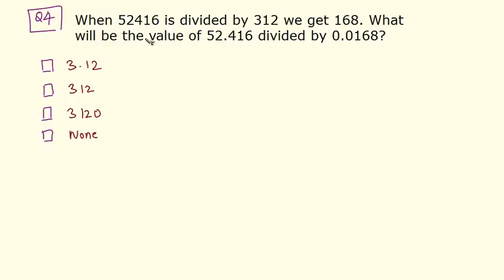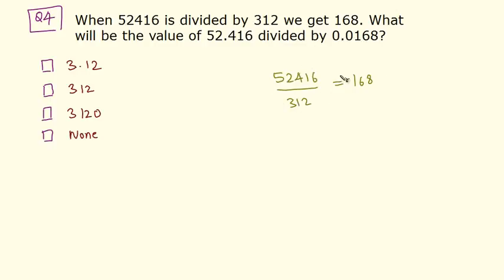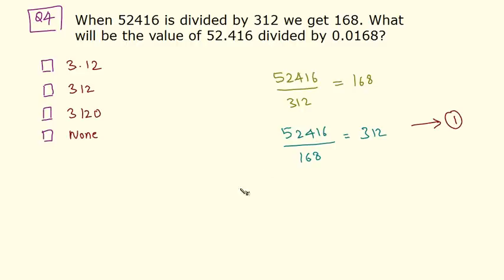Let's solve this question and find out the answer. We have been given that 52416 when divided by 312 gives 168. So 52416 divided by 312 is equal to 168. Now what will be the value of 52416 divided by 0.0168? We can modify what we have been given — we can write this as 52416 divided by 168 comes down, and 312 goes up, and it doesn't change anything. Let's name this equation 1. Now we have to find out 52.416 divided by 0.0168.